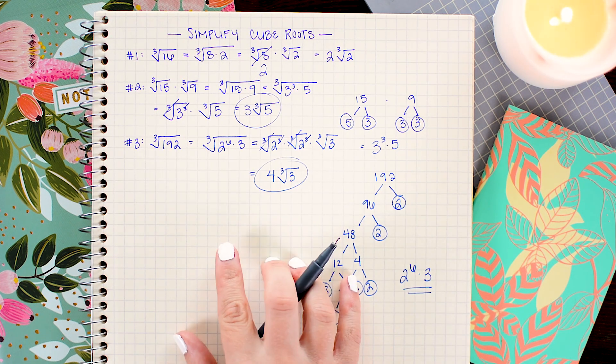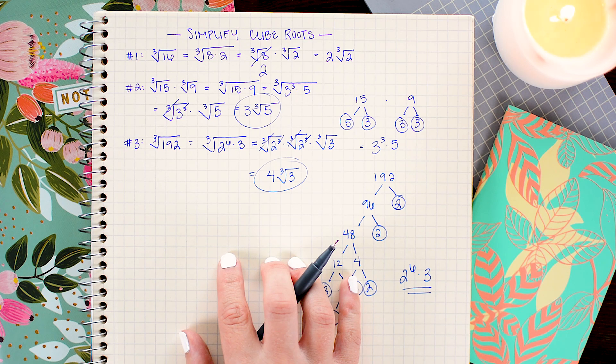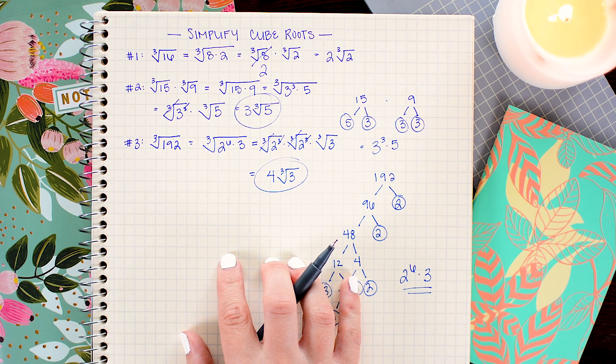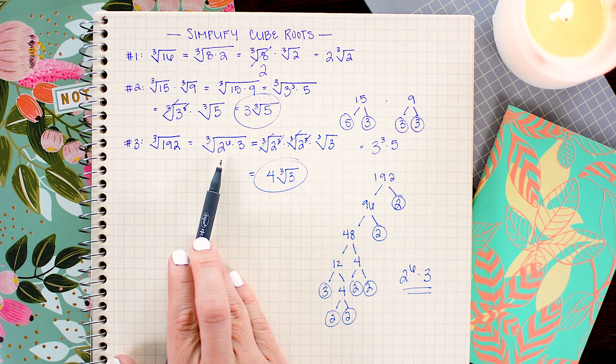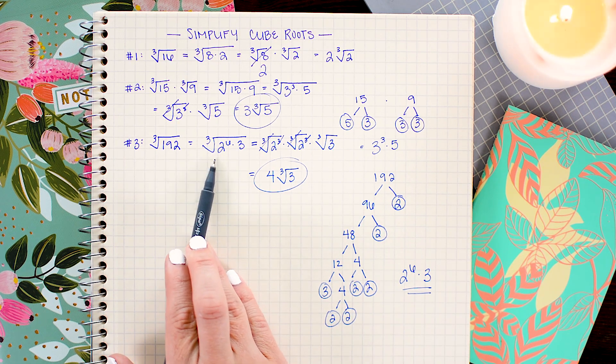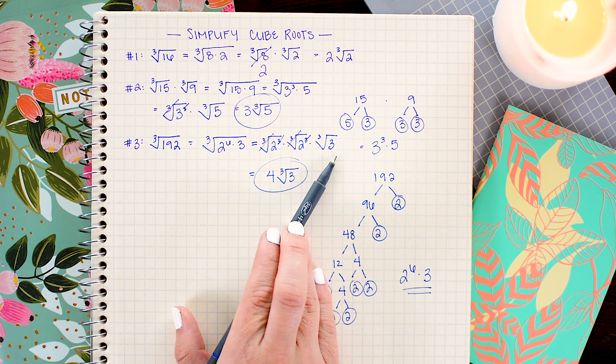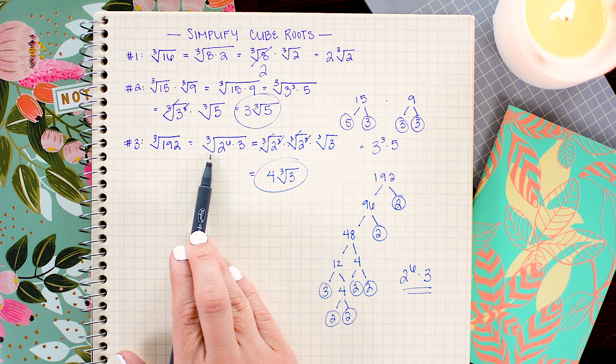The last thing I want to show you today is how to use the alternate fraction notation to simplify these problems. Because in some roots, especially higher order index roots, the fraction notation can be a really nice way to simplify roots. So instead of going from the cube root of 2 to the 6th times 3 and breaking into separate cube roots, let's go ahead and trade out the cube root for a power of 1 third.